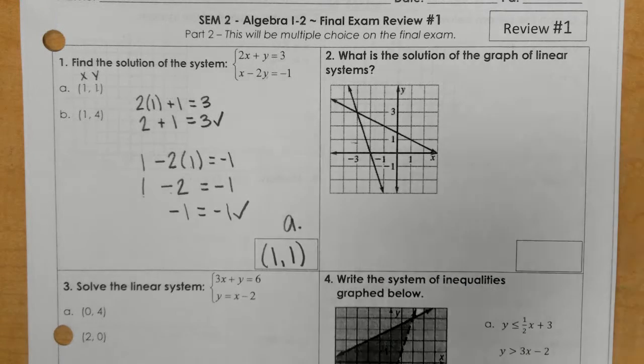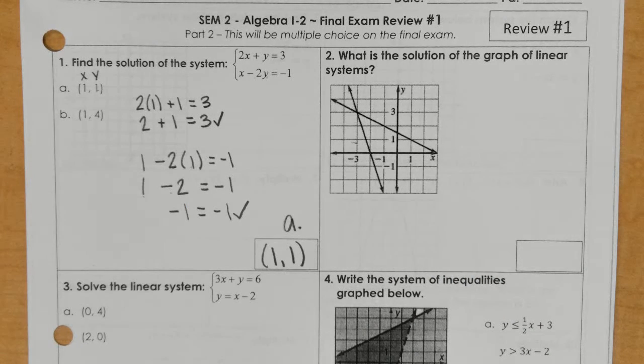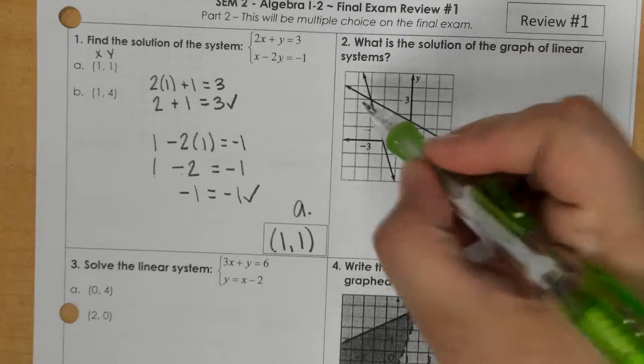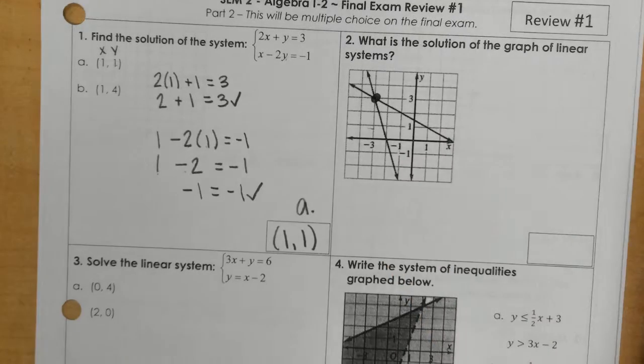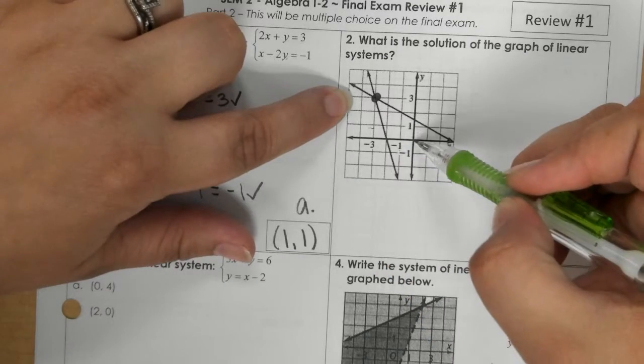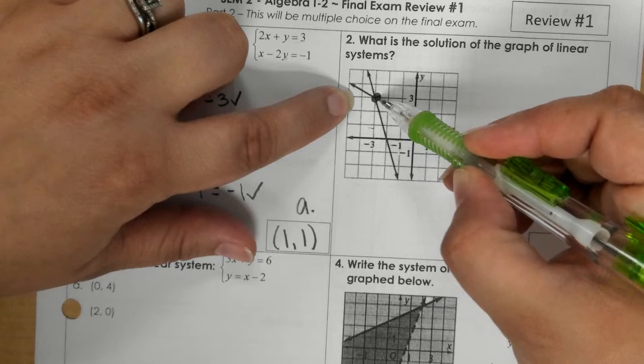On number 2, it says what is the solution of the graph of the linear system. So I find the point that the two lines meet. And that's right there. So that would be negative 3. And then I went up 3.